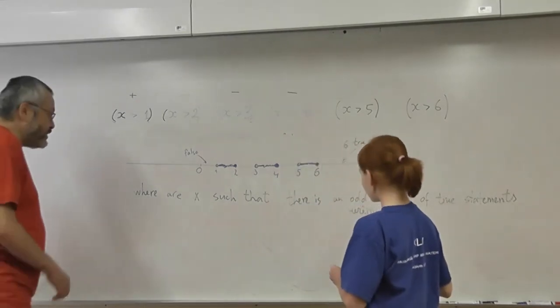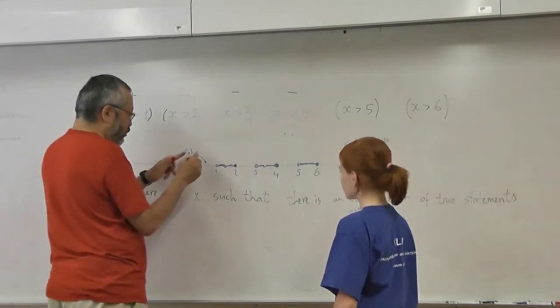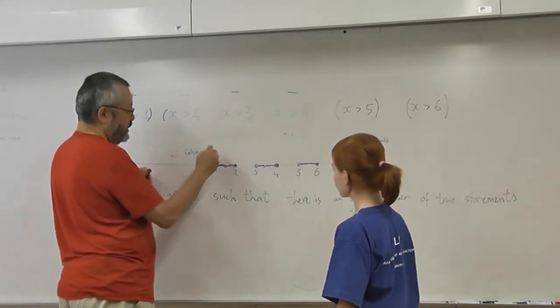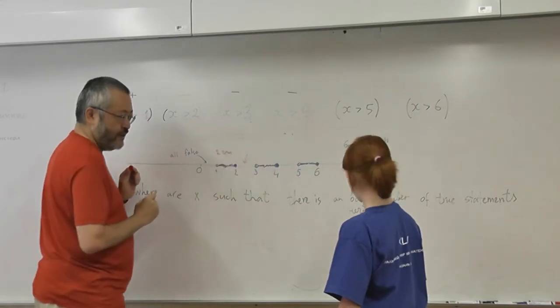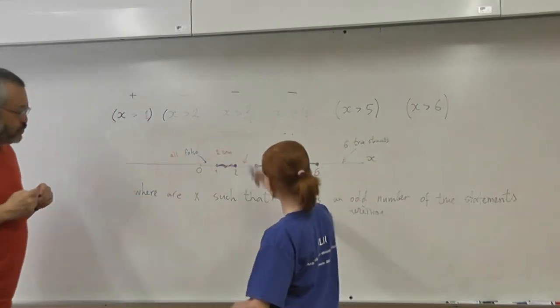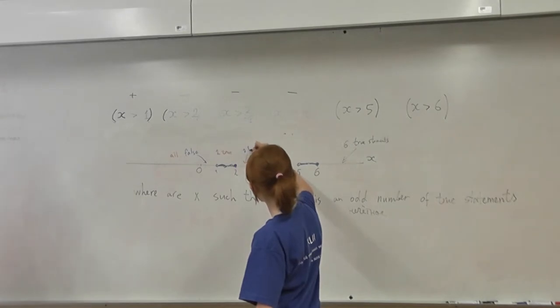Okay. So we can say this is one. All false. Here is one true. And in this region we have two true statements. It is not what we want.